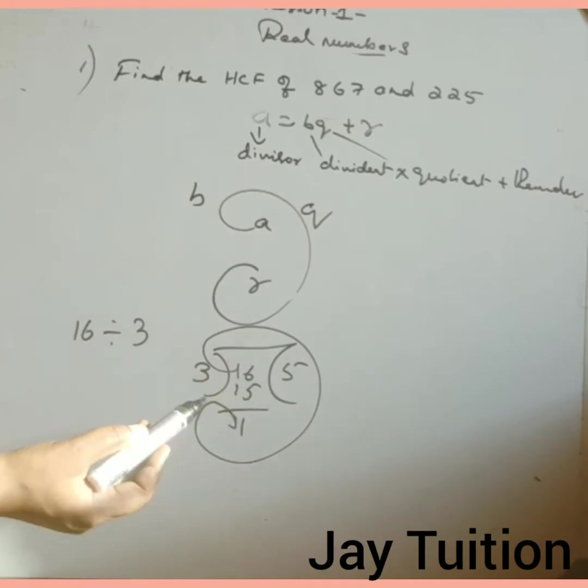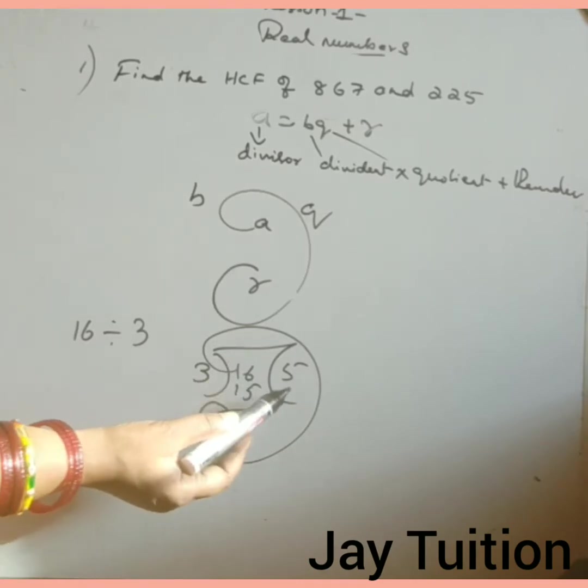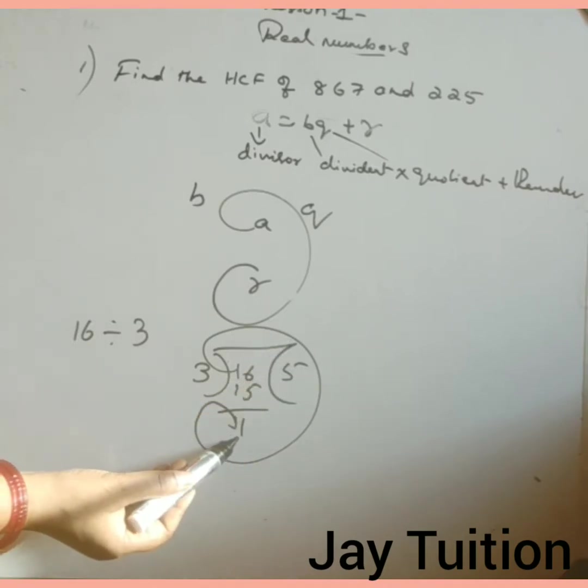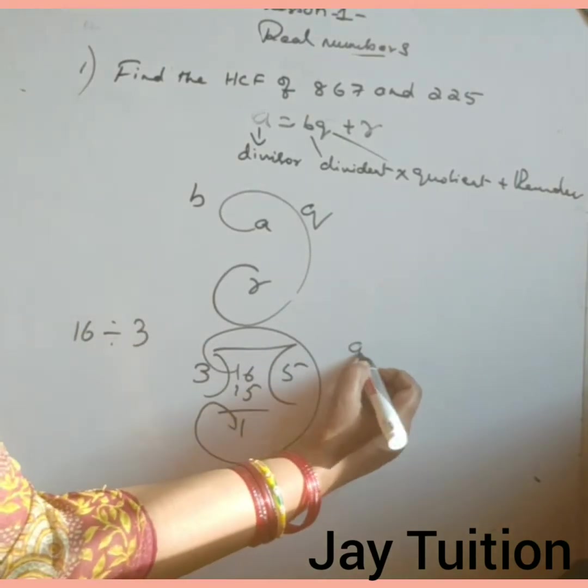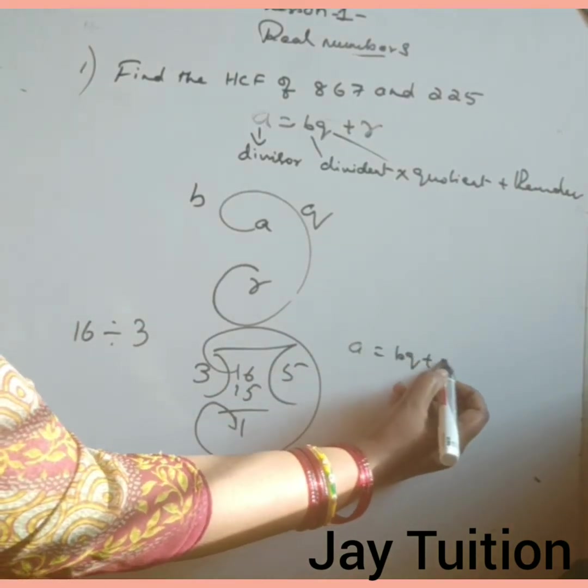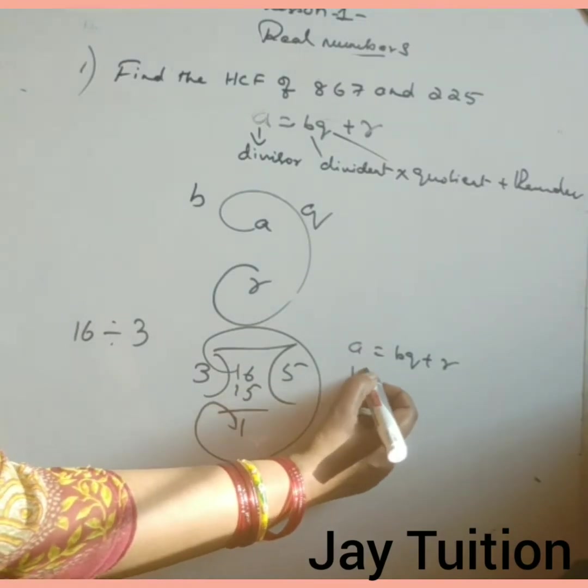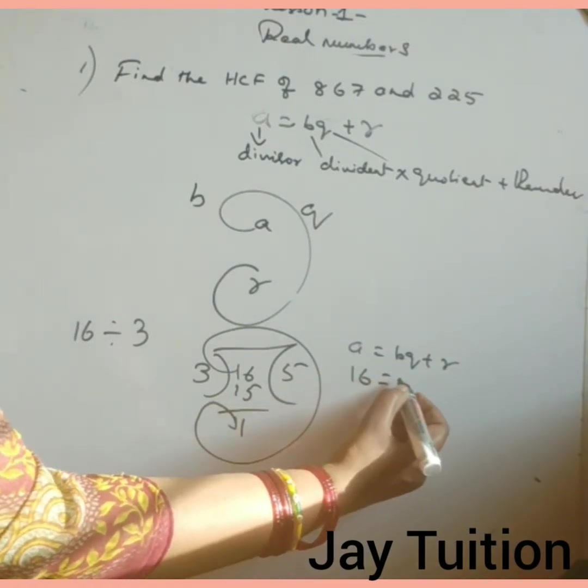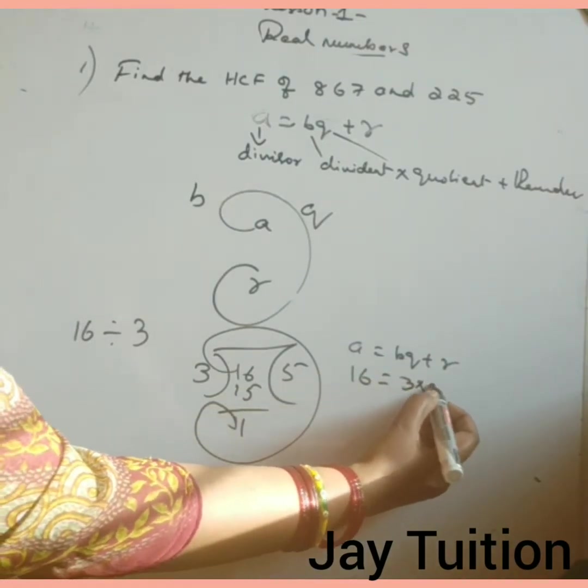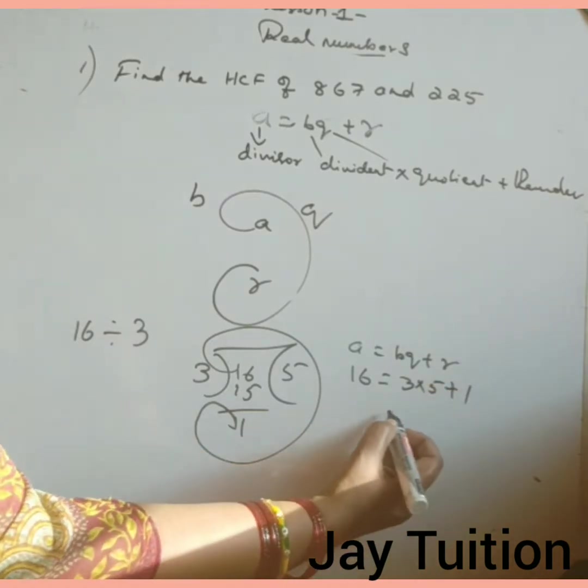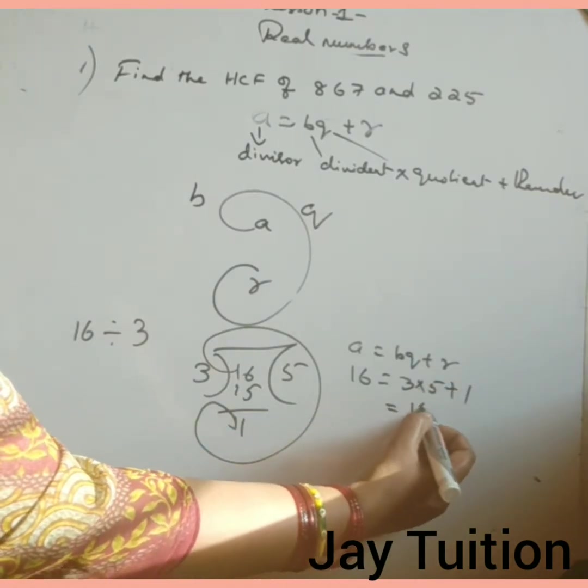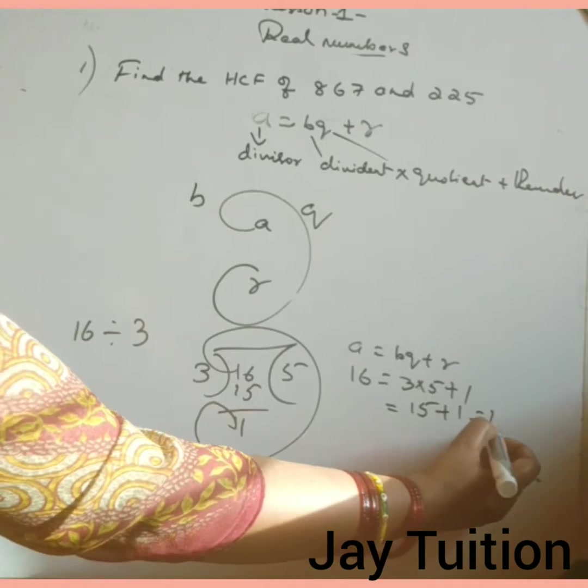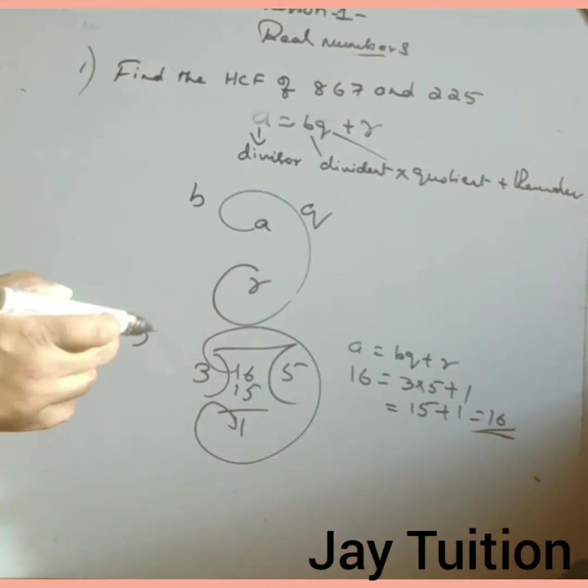16 is A, B is 3, Q is 5, and 1 is R. Now we will solve the problem using A equals to BQ plus R. A is 16, B is 3 into quotient 5 plus remainder 1. If you solve, 3 times 5 is 15 plus 1, you will get the answer.